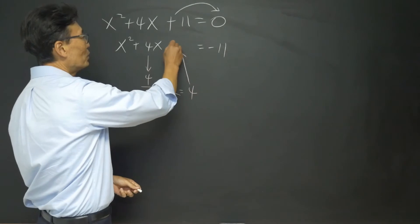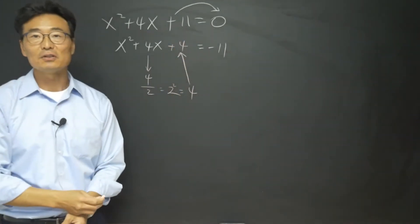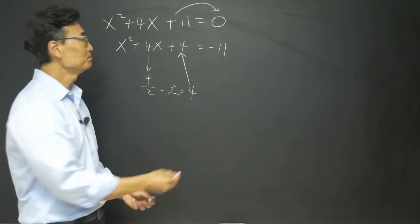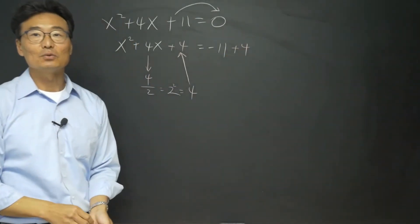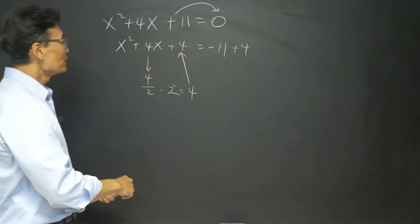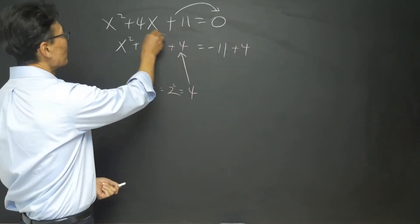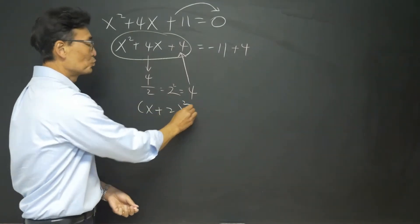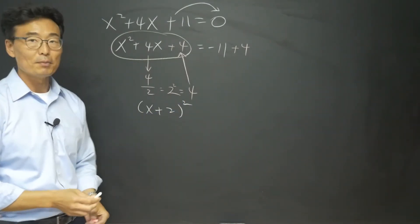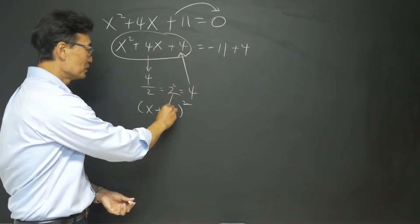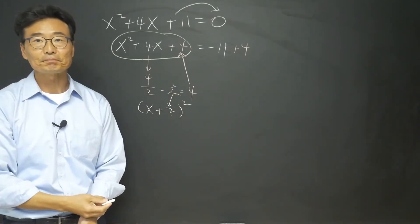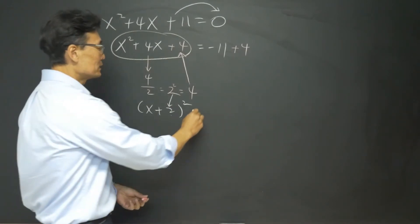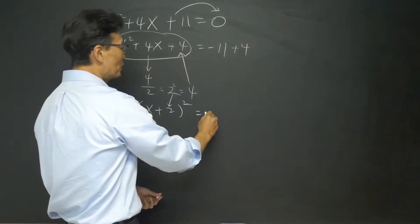Take that 4 and add it to the left side of the equal sign. Whatever you do to the left side, you must do to the right side as well. If we factor the left side, we get x plus 2, squared — it's always going to be in that format. Notice the 2 goes in there. That equals negative 11 plus 4, which is negative 7.